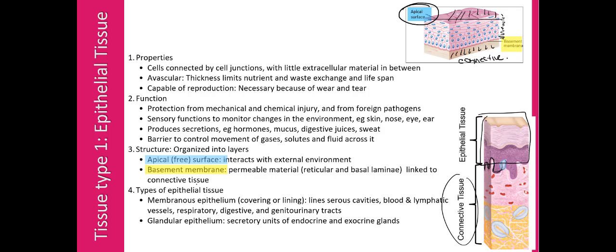There are two main types of epithelial tissue. The first is covering type — the membranous epithelium. The second type is glandular epithelium. Glandular epithelium produces secretions, and is split based on where those secretions are released: into the body (endocrine glands) or outside the body (exocrine glands). Endo refers to inside, exo refers to outside.